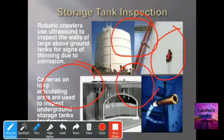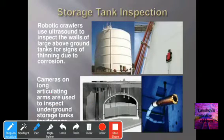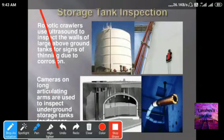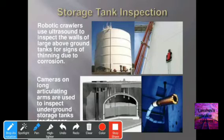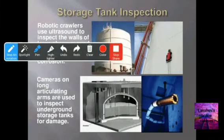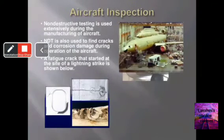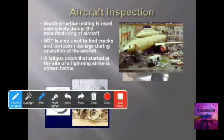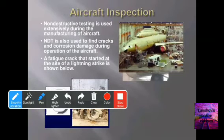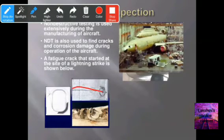For storage tank inspection, robotic crawlers use ultrasound to inspect the walls of large above-ground tanks for signs of thinning due to corrosion, and cameras with long articulating arms are used to inspect underground storage tanks for damage. NDT is used extensively during aircraft manufacturing and also to find cracks and corrosion damage during aircraft operation. A fatigue crack that started at the site of a lightning strike can be detected this way.